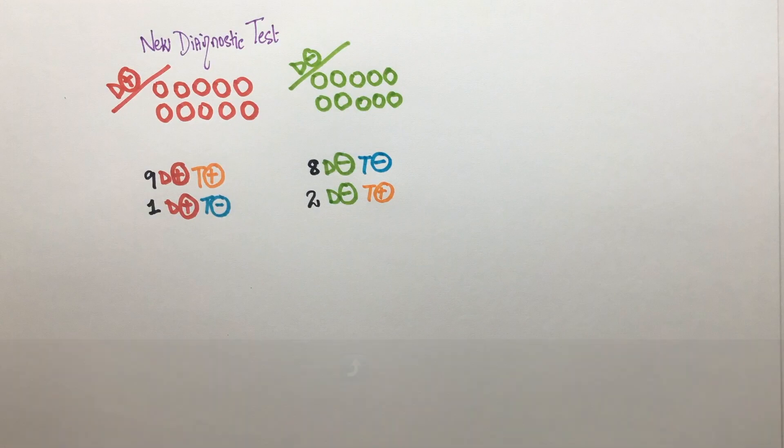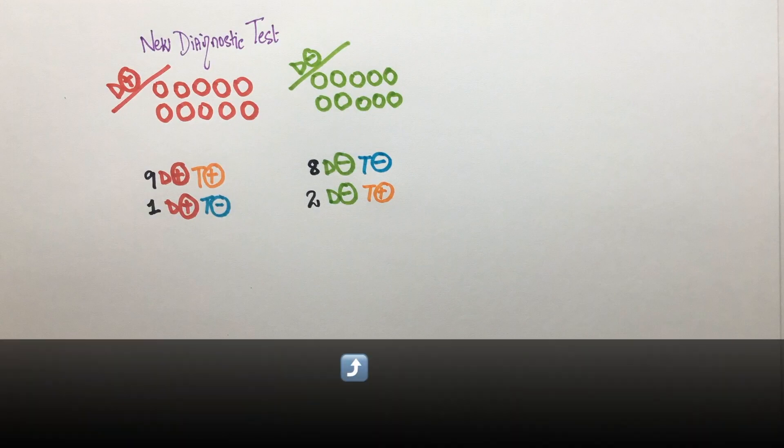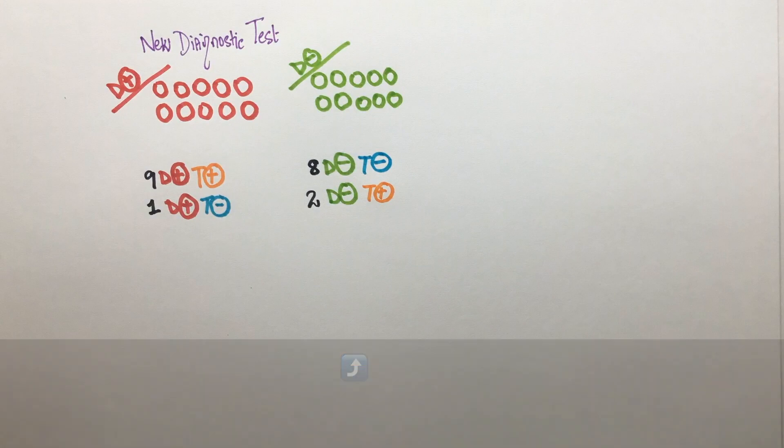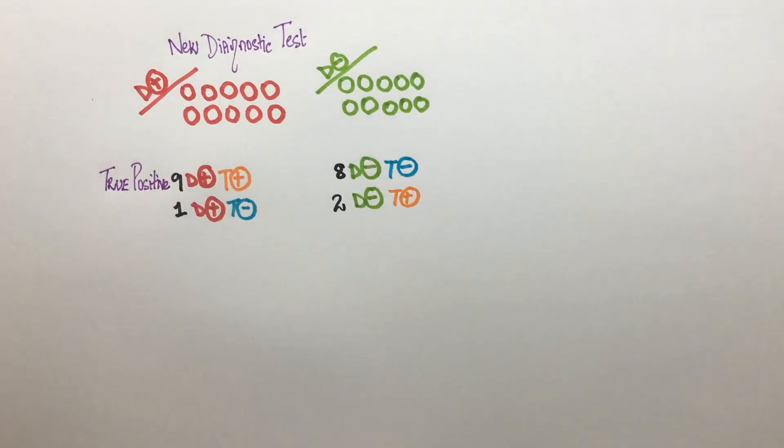In this group of 10 healthy people, eight tested negative and two tested positive. Our test has correctly identified the disease in these nine people so they are categorized as true positive.